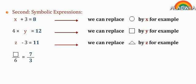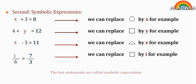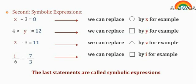A rectangle over 6 equals 7 over 3. We can replace the rectangle by l. For example: l over 6 equals 7 over 3. These last statements are called Symbolic Expressions.